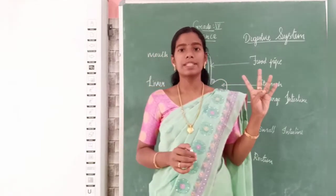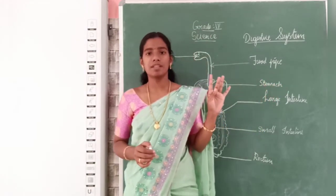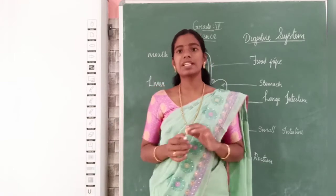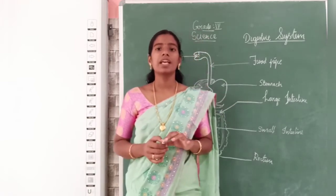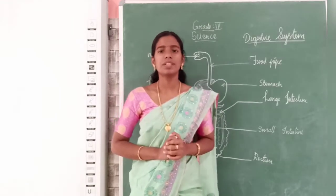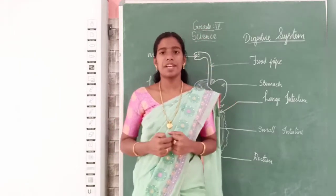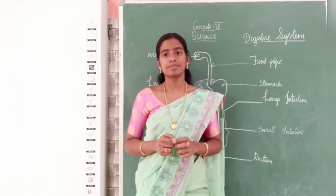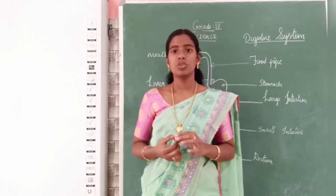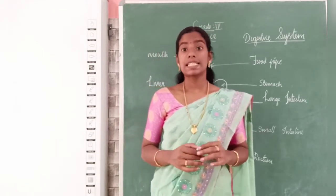The four types of organ systems are: digestive system, respiratory system, circulatory system, and excretory system. In today's class we will learn about the digestive system. What is digestion? For what do we need the digestive system? Does anybody know?